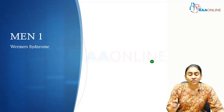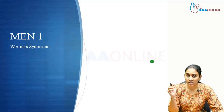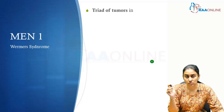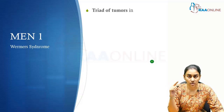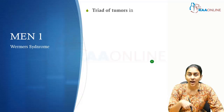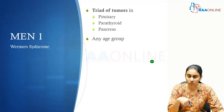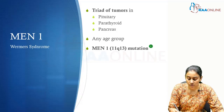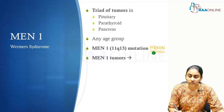Having understood this, let us move on to understand the different types of MEN syndrome. First, MEN 1, also called Wermer's syndrome. There is going to be a triad of tumors — in head-to-foot order — in the pituitary, parathyroid, and pancreas. MEN 1 has been reported across all ages from 5 years to 80 years, and is seen in patients with a mutation in the menin gene, found on chromosome 11.